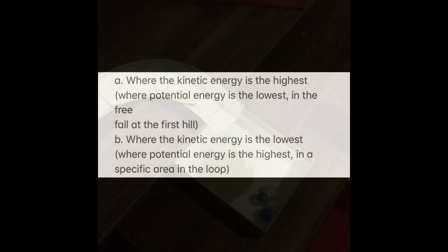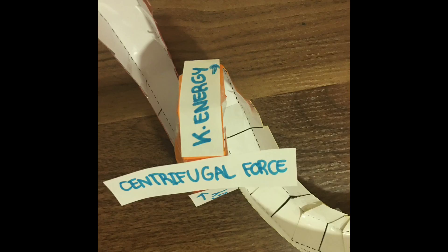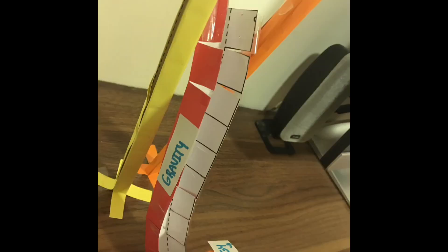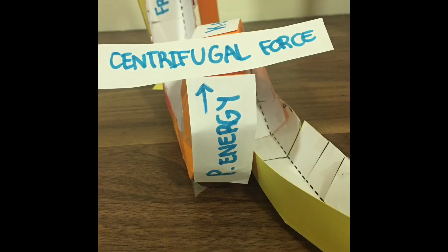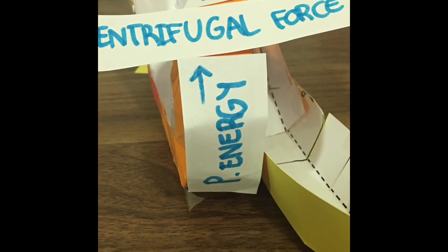The forces acting against the marble are friction and air resistance, as well as other factors. Let's talk about kinetic energy. Kinetic energy is highest where potential energy is lowest. I chose this part in the loop, as shown by the arrow. That's not the only place with kinetic energy, but that's just an example. Where kinetic energy is lowest is where potential energy is highest, and shown by the arrow.